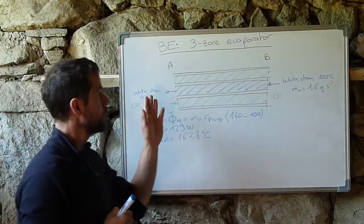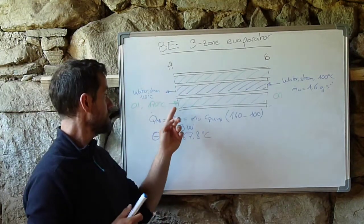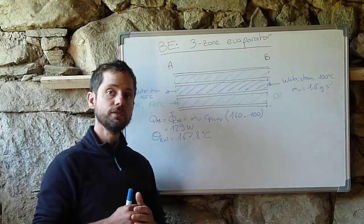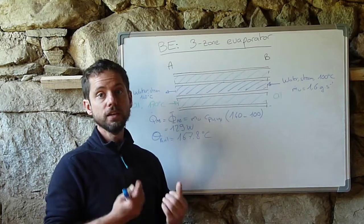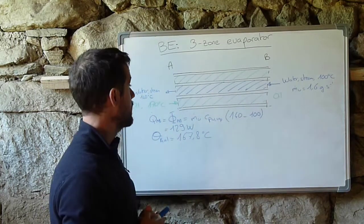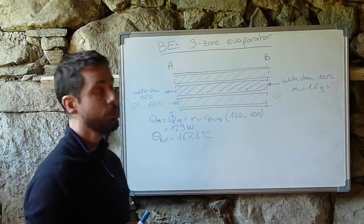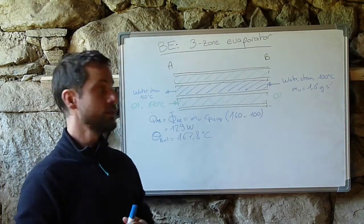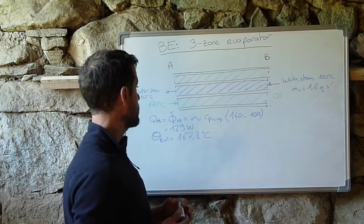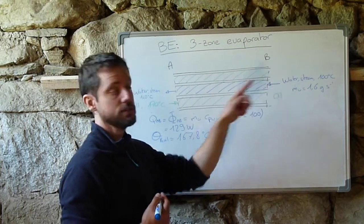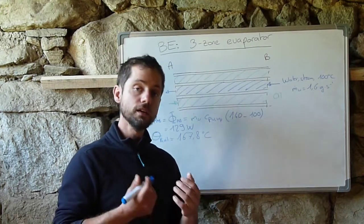So now you know the heat flux exchange and the temperatures of the inlet and outlet for each of the fluids. Then you do a proper design by calculating the global heat transfer coefficient U.